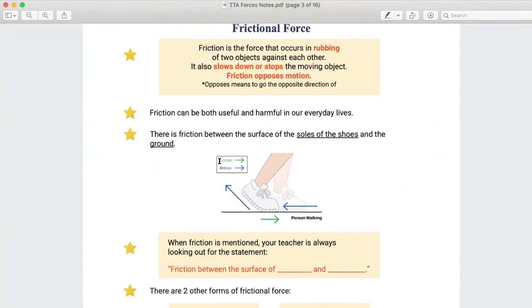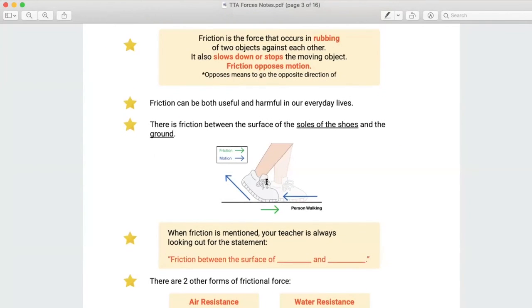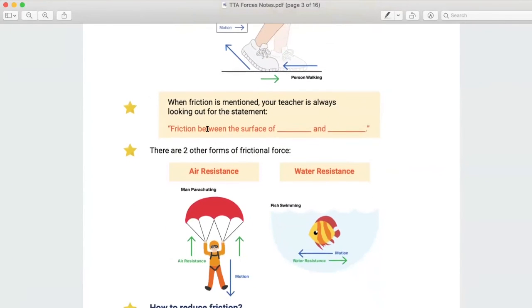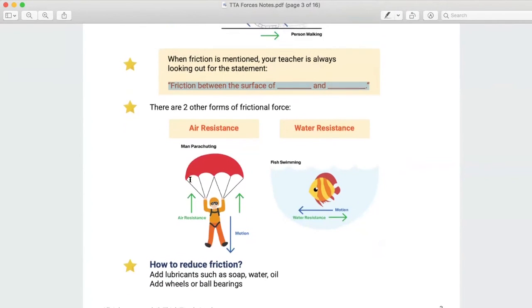So, friction can be useful and harmful, right? So, harmful is when your soles of the shoe will get worn out, right? But it's useful because it can prevent you from slipping. Okay, so friction is mentioned, right? It's always friction between the surface of something and something, right? Okay, so always remember this. Okay, so if they use this or what we did today, which is frictional force between something and something. Okay, it's always in this writing structure.